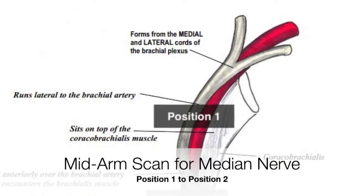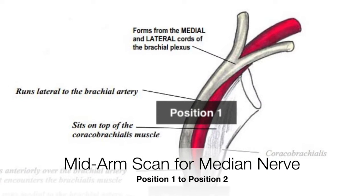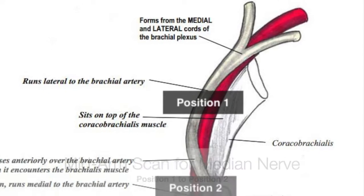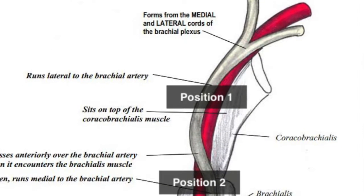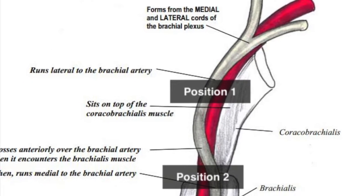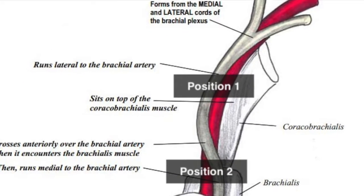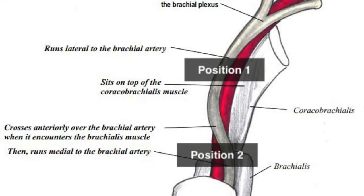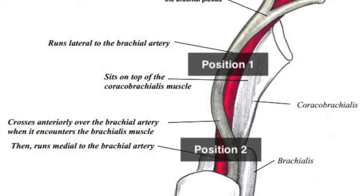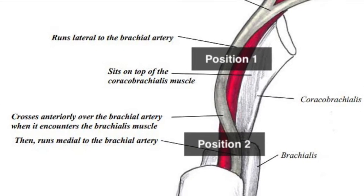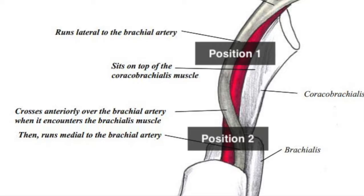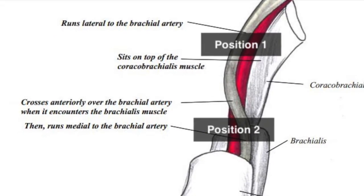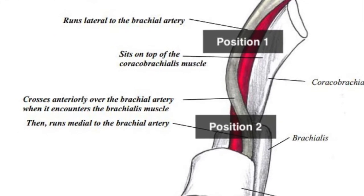We begin the scan in position 1. Here, the median nerve lies laterally to the brachial artery at the mid arm. Upon a distal scan, it can be seen traversing over the top of the artery to lie on its medial aspect just above the cubital fossa.